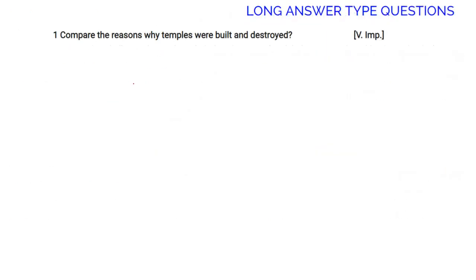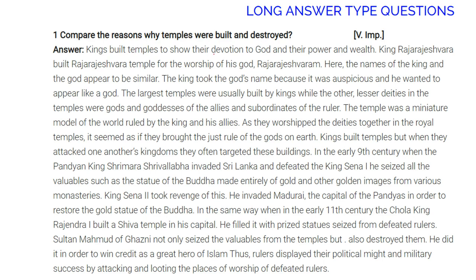Kings built temples to show their devotion to god and to display their power and wealth. The Raja Rajeshwara temple was built for the worship of god, with the king taking on the god's name as it was auspicious, wanting to appear like a god. The largest temples were usually built by kings, while lesser deities in the temples were gods and goddesses of the king's allies and subordinates. The temple was a miniature model of the world ruled by the king and his allies, and as they worshipped deities together in royal temples, it seemed as if they brought the just rule of the gods to earth. However, when kingdoms attacked one another, they often targeted these very buildings.